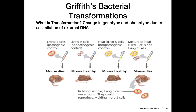When he took those heat-killed cells and injected them into a mouse, they also didn't cause infection. In the actual experiment, he mixed the heat-killed pathogenic cells with living non-pathogenic cells. When he injected those into a mouse, the mouse actually died. When he checked the blood, he found living S cells were present, meaning the non-pathogenic cells had taken up the DNA from the heat-killed pathogenic cells, incorporated it into their own genomes, and became transformed — acquiring the new genotype and phenotype of pathogenic S cells capable of causing infection and death.